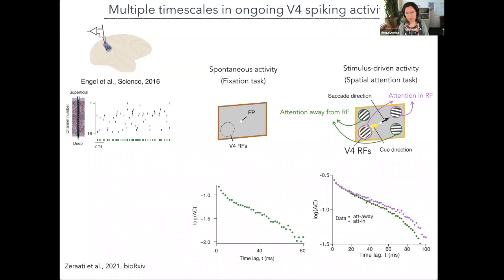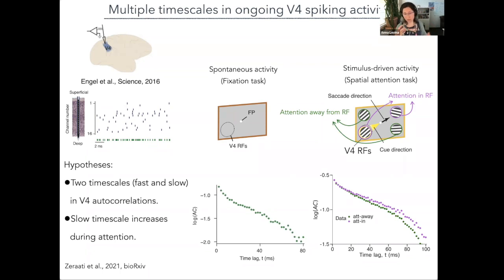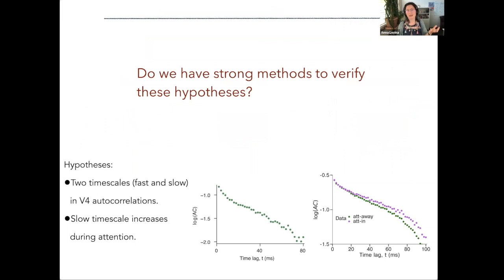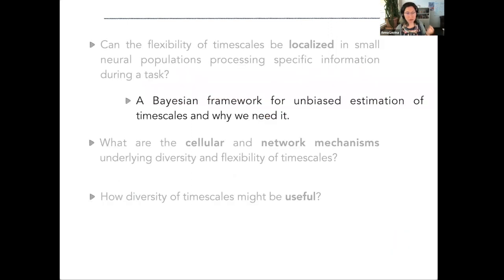Here are the two different autocorrelation functions. The green one is computed from the attention-away control condition, and the purple one is when the monkey attended toward the receptive field. Visually, there is some difference: for small lags they look similar, but the tails behave differently. The hypothesis we can formulate is that there are two timescales better describing the data — a short timescale for the small-lag behavior and a longer timescale in the tail — and that the slow timescale is modulated by attention. Now we need statistical methods to check this hypothesis.